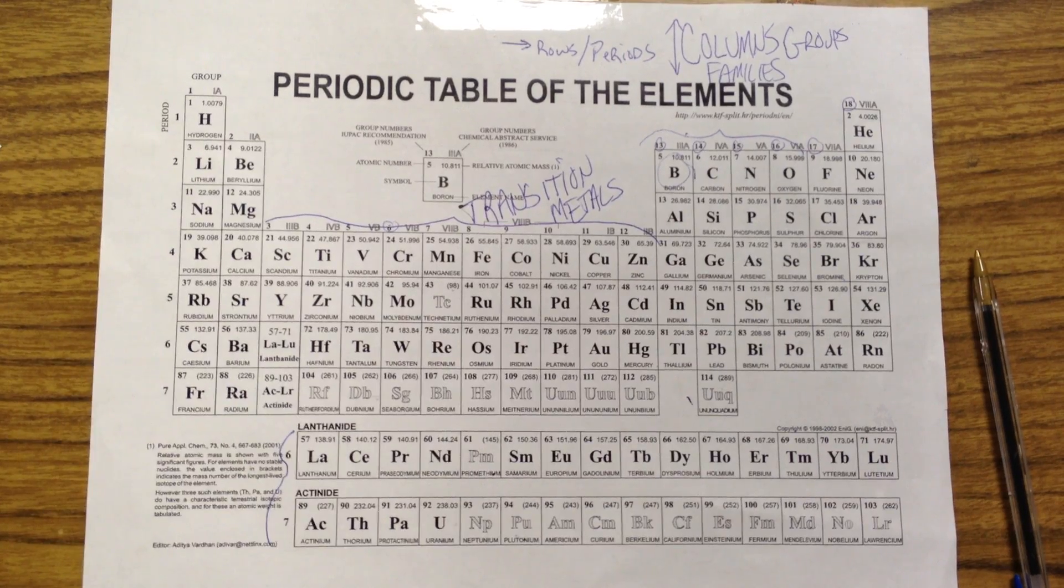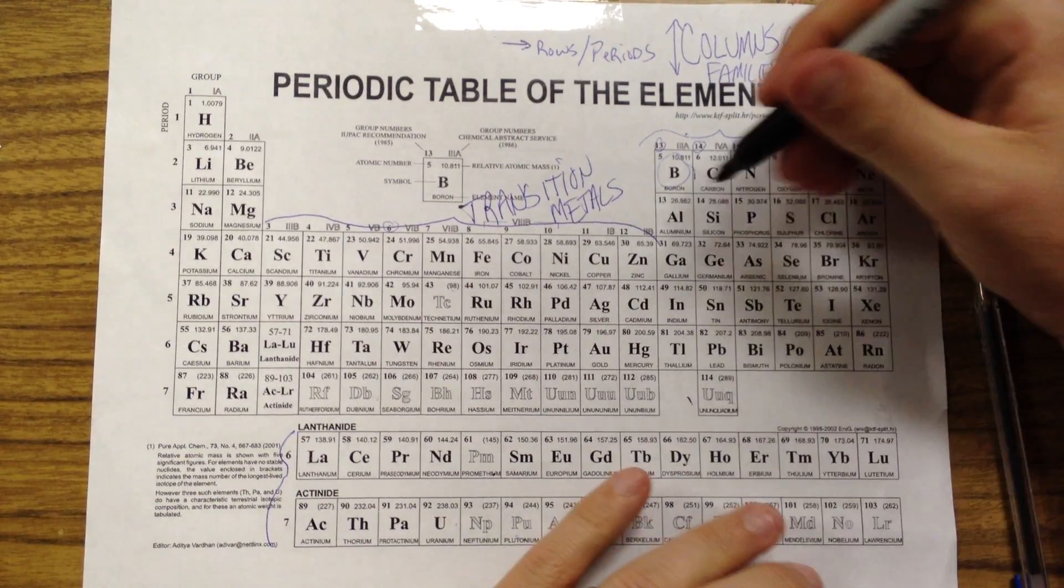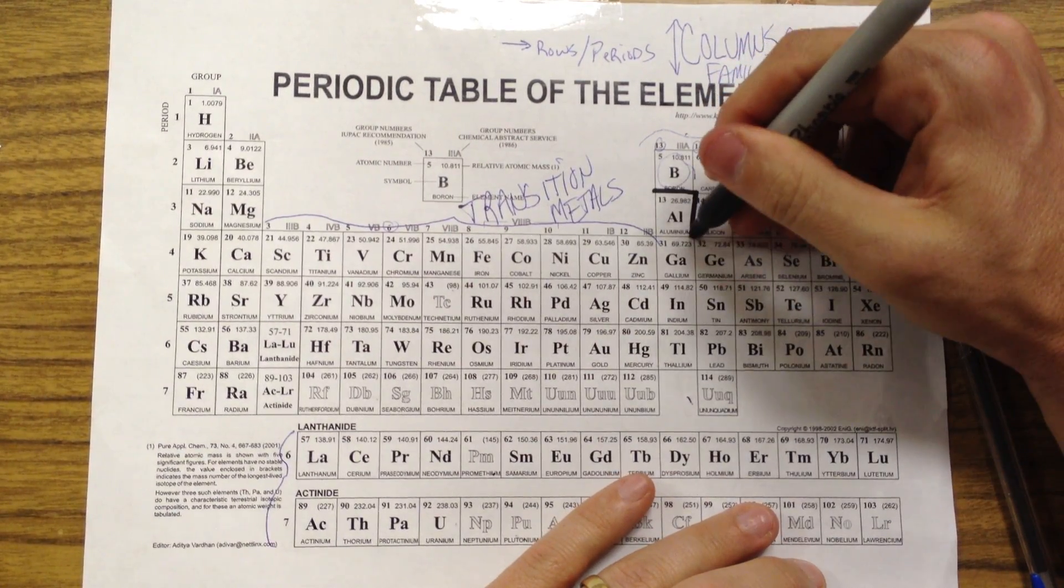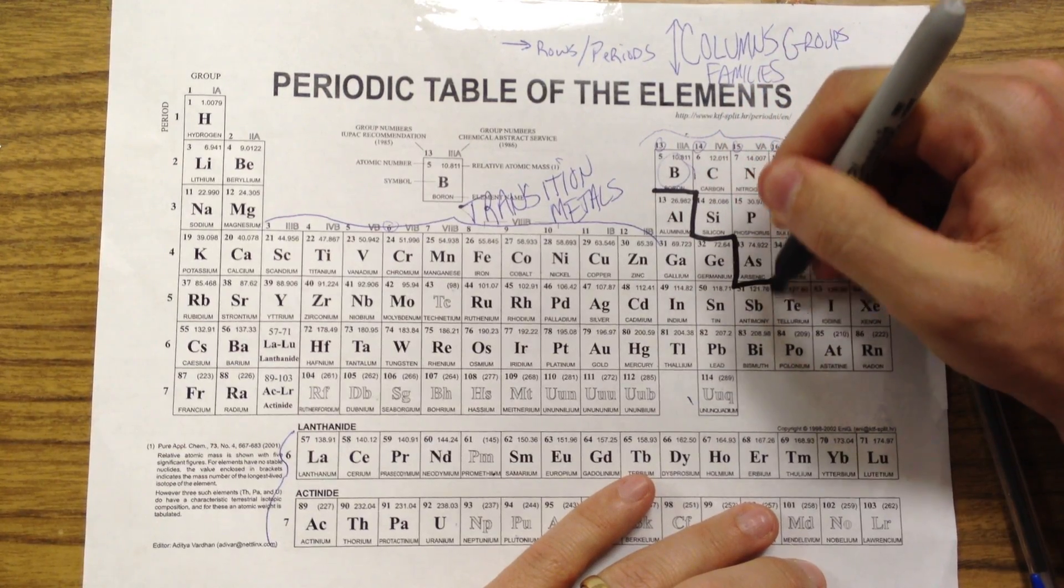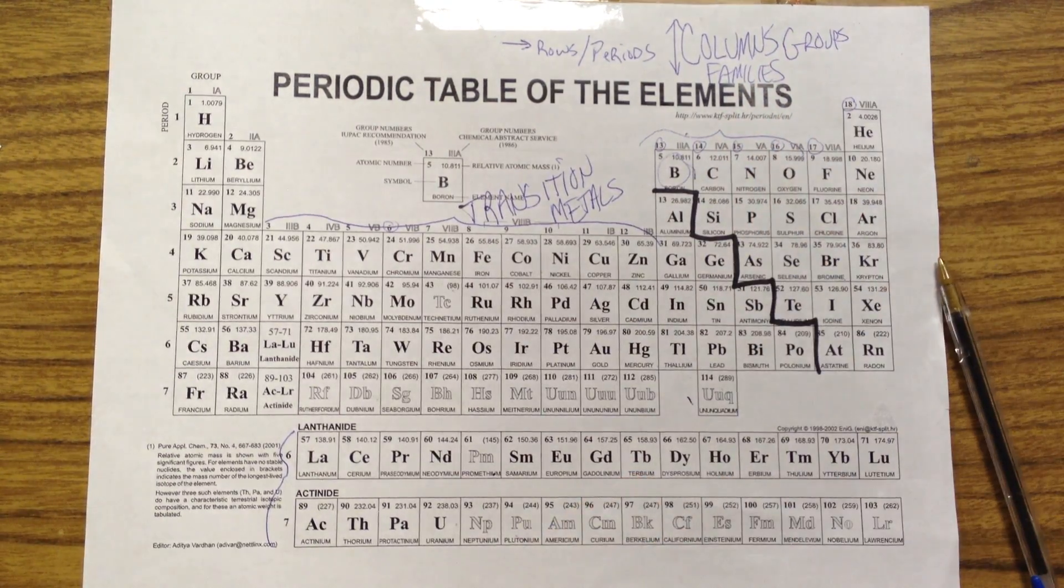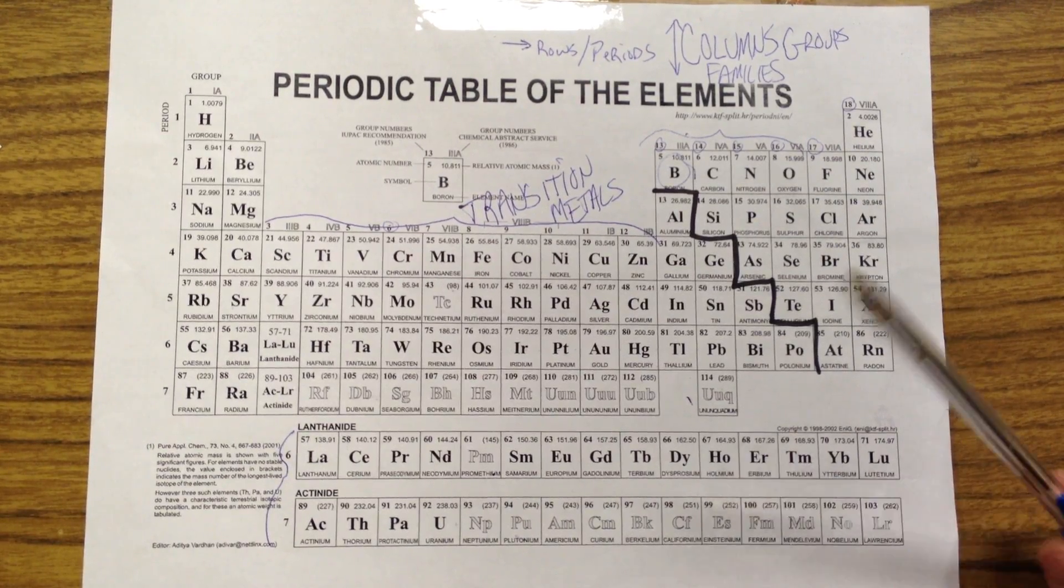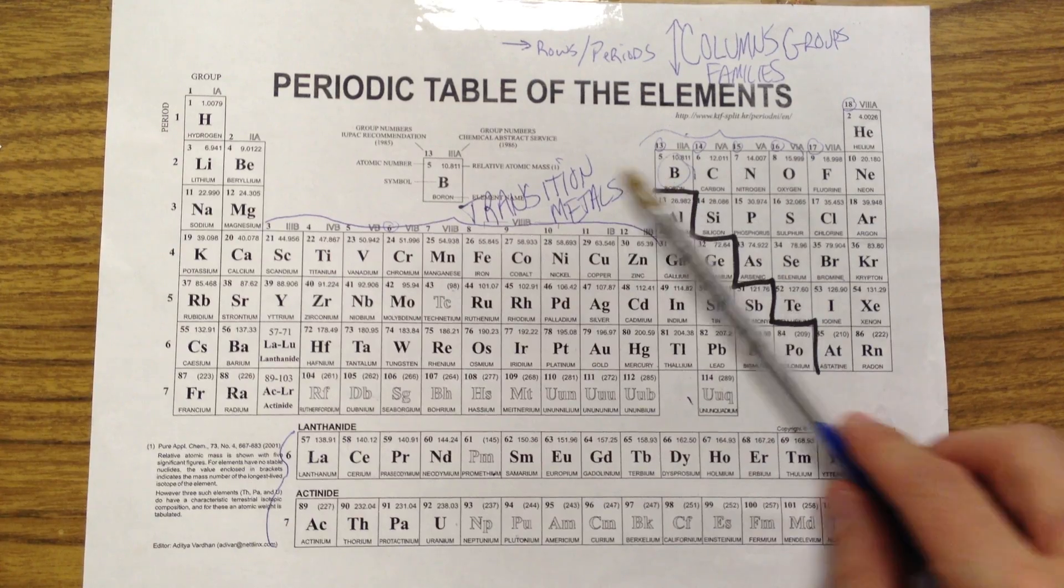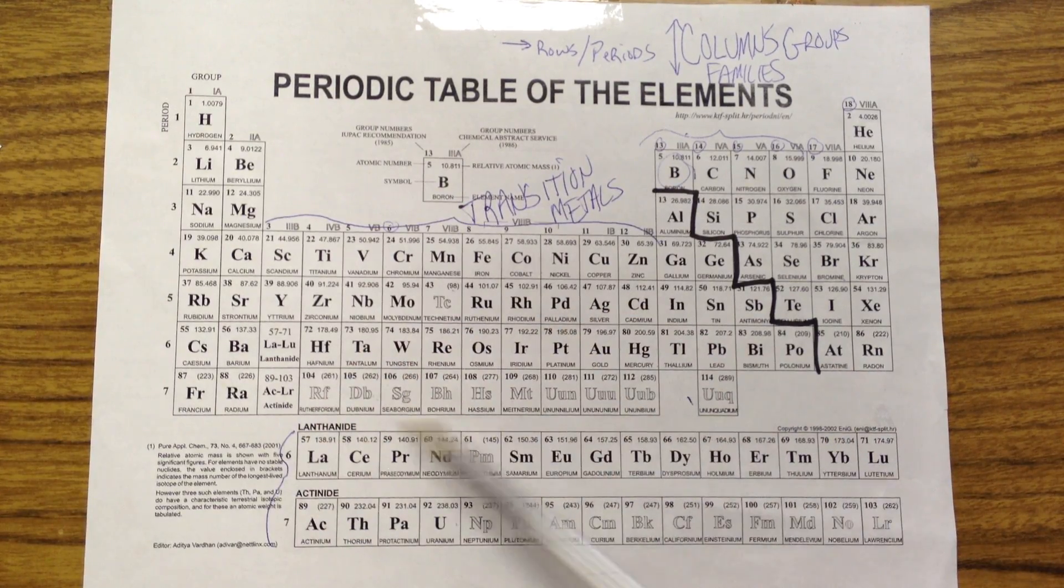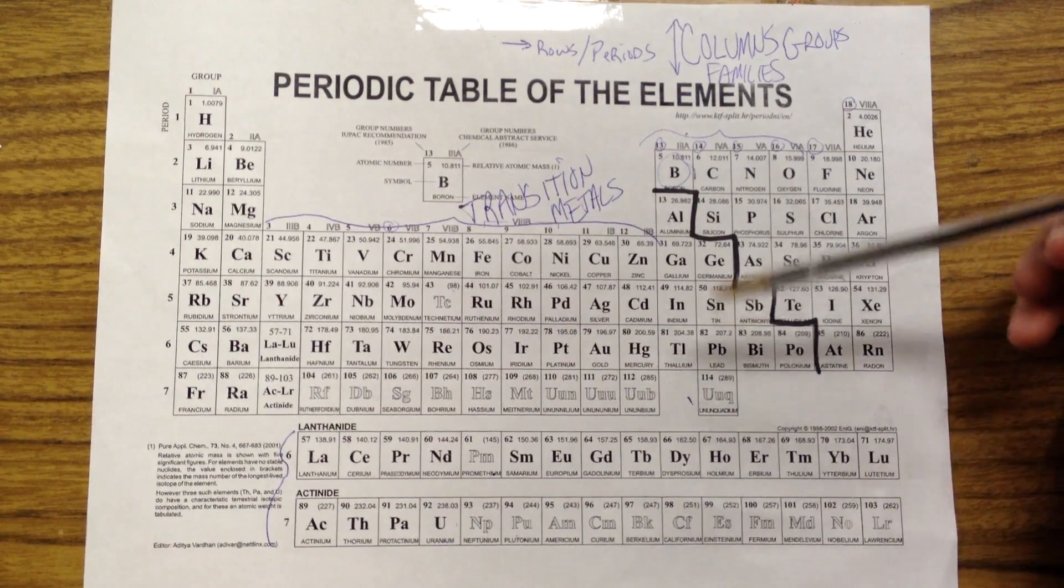And we've already put that on yours. That little staircase there is the dividing line between metals and non-metals. Generally speaking, there are a couple of exceptions, but things to the left of that line, and that does include the rare earth metals, are metals.